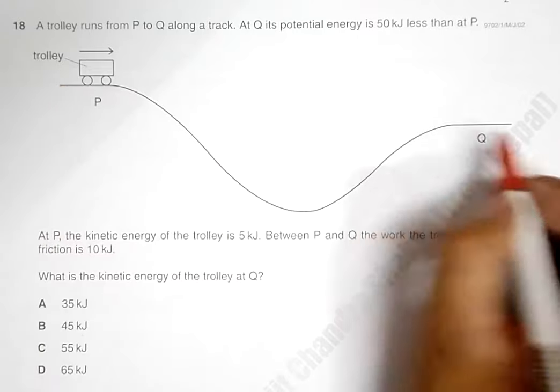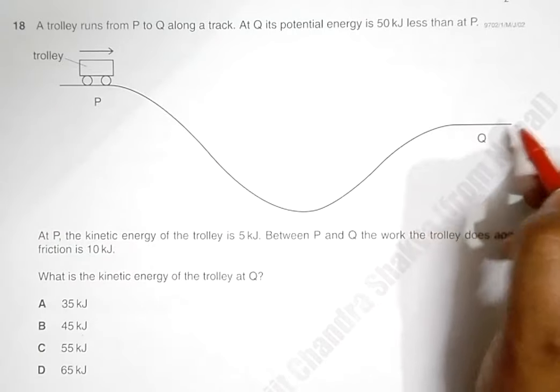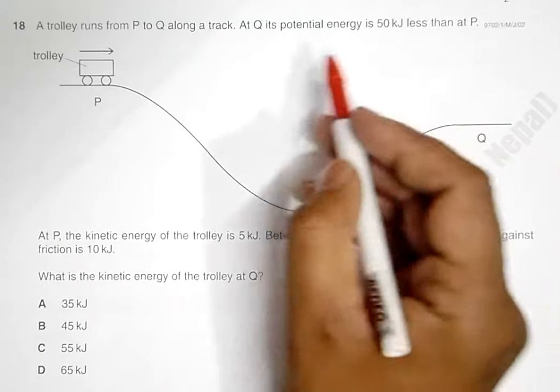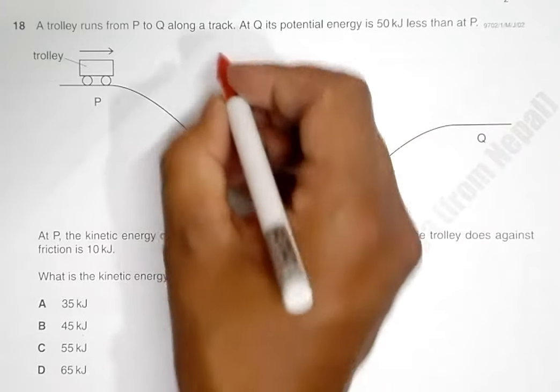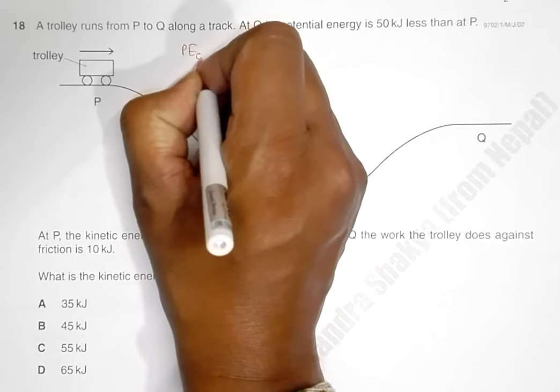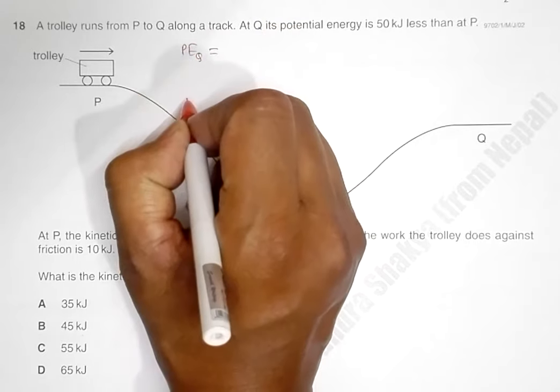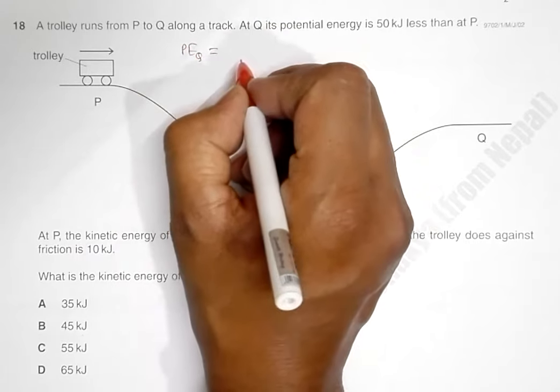The potential energy is 50 kilojoules less at Q than at P. So that means potential energy at Q is equal to PE at P minus 50. This is equation number 1.